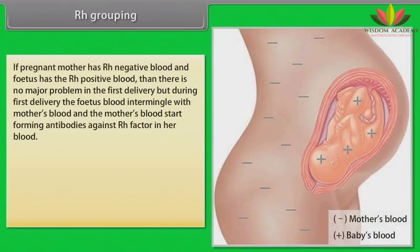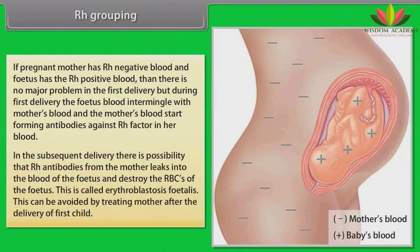If a pregnant mother has RH negative blood and the fetus has RH positive blood, there is no major problem in the first delivery. But during the first delivery, fetal blood intermingles with the mother's blood, and the mother's blood starts forming antibodies against the RH factor. In subsequent deliveries, RH antibodies from the mother may leak into the blood of the fetus and destroy its RBCs. This condition is called erythroblastosis fetalis, and it can be avoided by treating the mother after the first delivery.